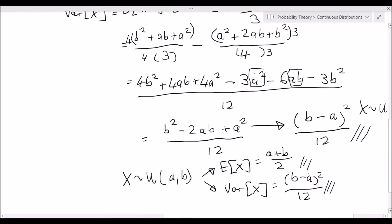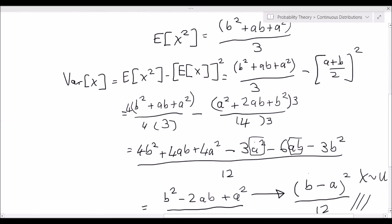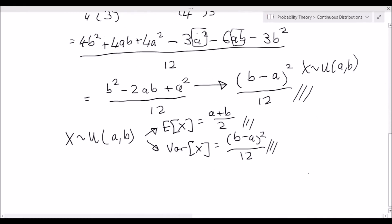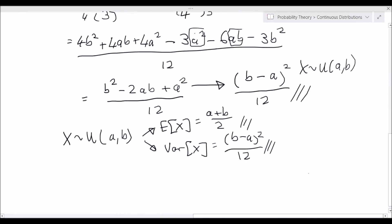So this is how you derive these results — they're not very difficult. You just need to know how to do a bit of algebra and factorization, and then you can derive the expected value as well as the variance of a random variable x that follows the uniform distribution over an interval a to b. Thank you very much for watching. I hope this video has proven helpful to your studies.